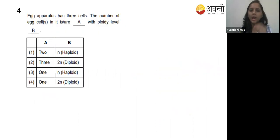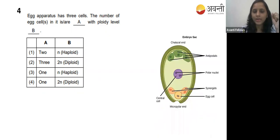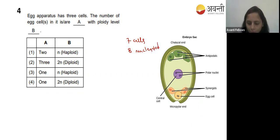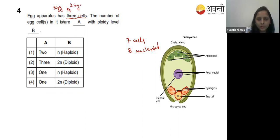Fourth question: the egg apparatus has three cells. The number of egg cells in it and the ploidy level. The egg apparatus is made up of seven cells, eight nucleated. In the egg apparatus, there is one egg cell and two synergid cells. Synergids attract the pollen tube, which forms from the micropylar end.